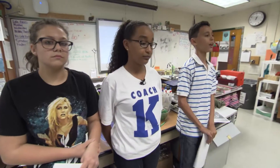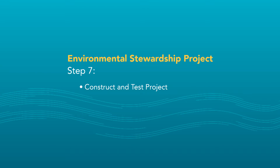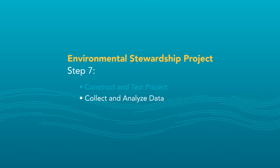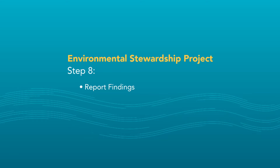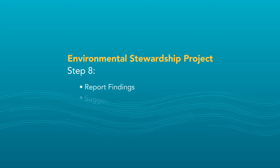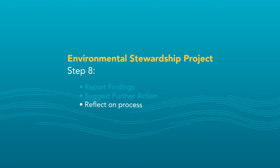Then we presented our project to the class. We want to replace the storm drains with bioretention cells, thus improving the water quality. During the weeks ahead, we will construct and test our bioretention cell, collect and analyze data, and draw conclusions. They go out and actually do the project — collect their data, chronicle everything they've done and everything they've spent. In the final step, we will report our findings, suggest further action, and reflect on the process.